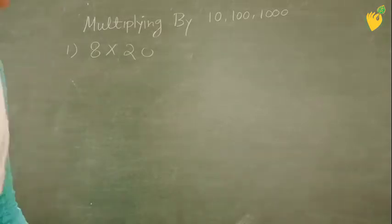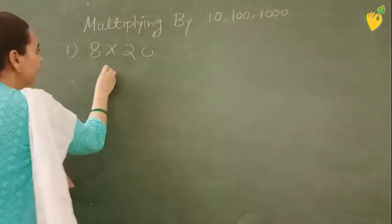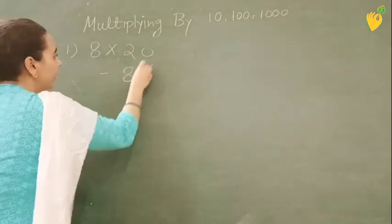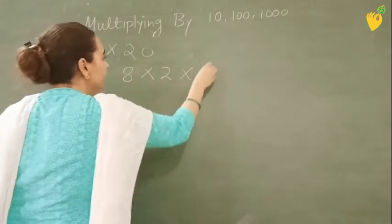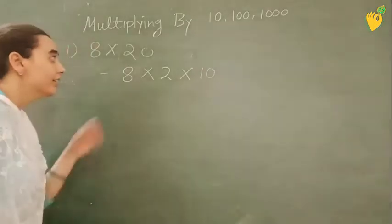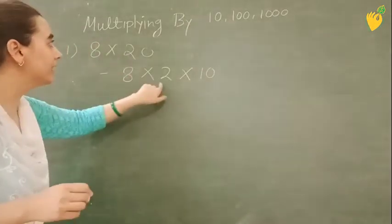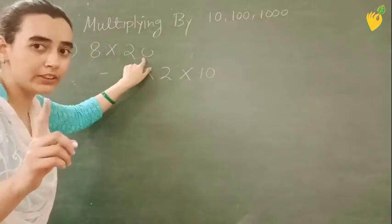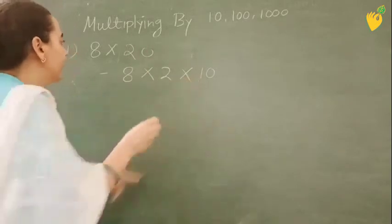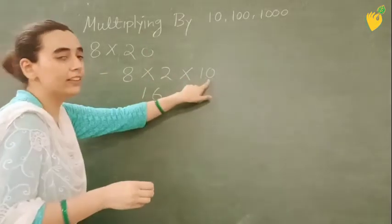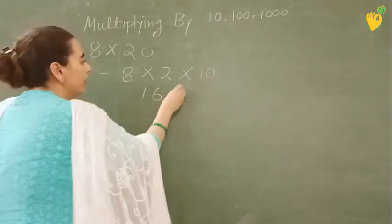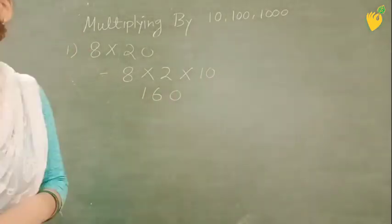See, the very first question is 8 multiplied by 20. Here, what you can do? You can break this in 8 multiplied by 2 and 10. 8 times 2 is 16. See, if we are not zero, 1 zero is there. So it will be 160. So 8 into 2, 16 and 1 zero is there. So we will write this zero here. Right?